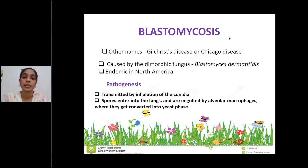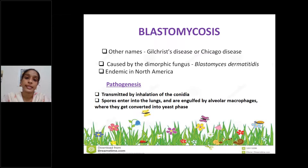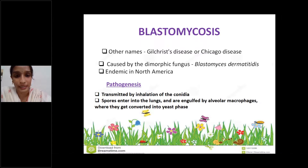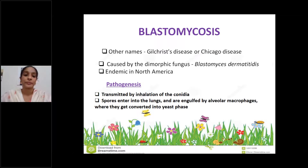The second systemic mycosis is blastomycosis, caused by Blastomyces dermatitidis. This disease is also known as Gilchrist's disease or Chicago disease. It is caused by a dimorphic fungus and is endemic to North America. Coming to pathogenesis: the route of transmission is by inhalation.